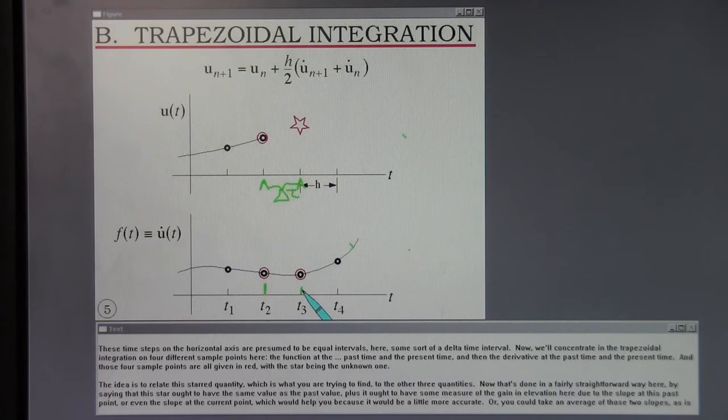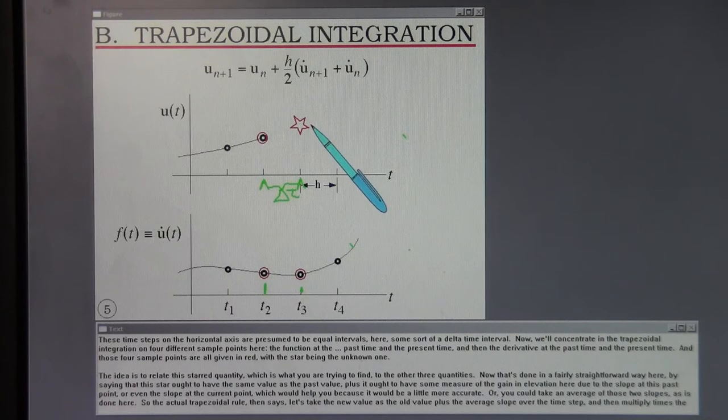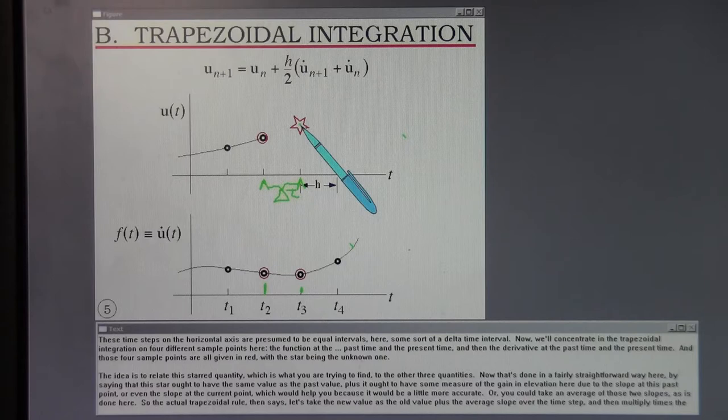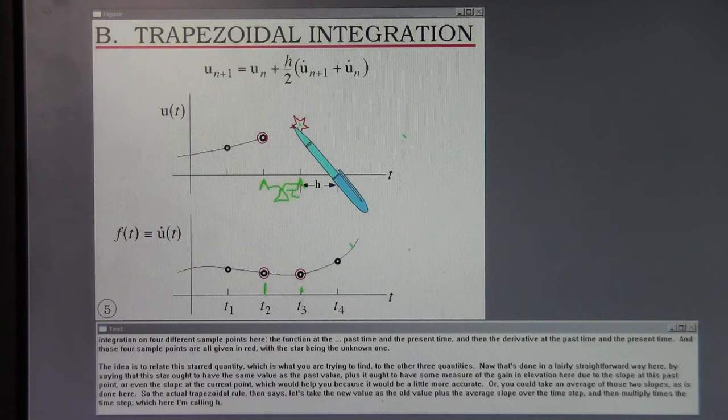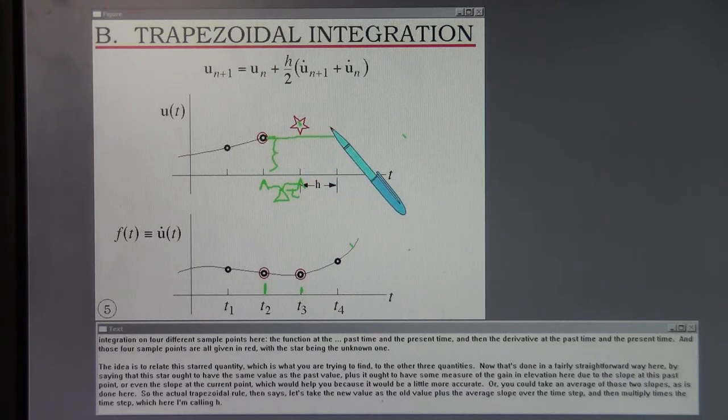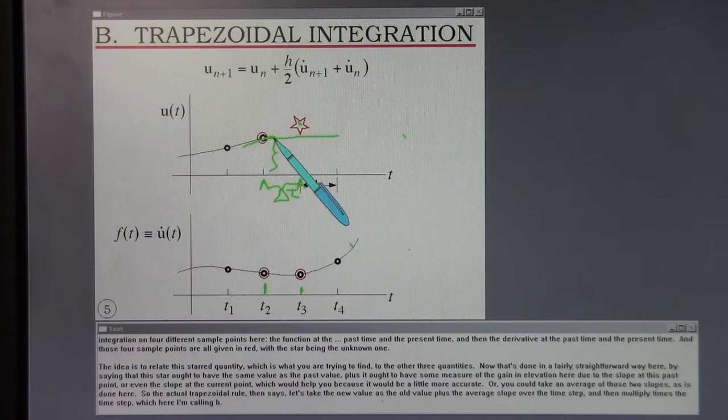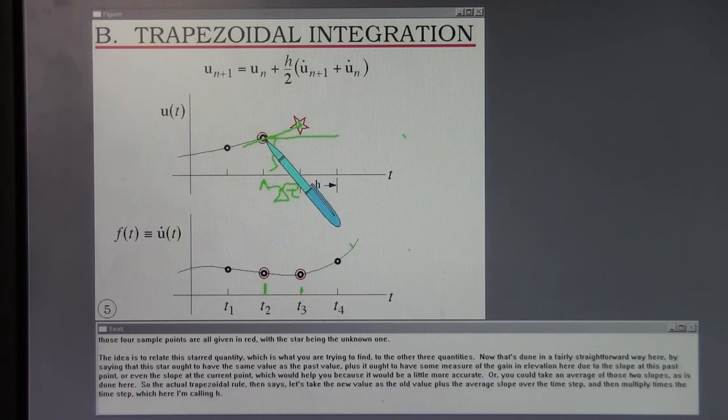Now, we will concentrate in the trapezoidal integration on four different sample points here. The function at the past time and the present time, and then the derivative at the past time and the present time. And those four sample points are all given in red with the star being the unknown one. The idea is to relate this starred quantity, which is what you're trying to find, to the other three quantities.